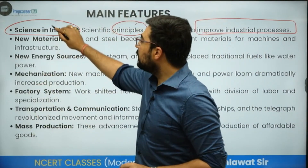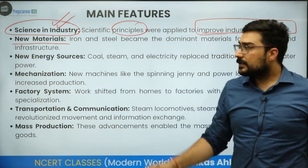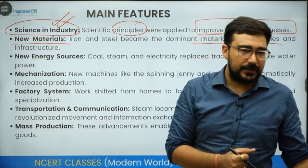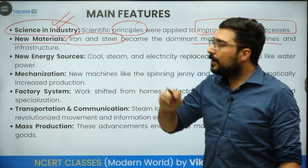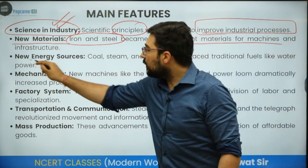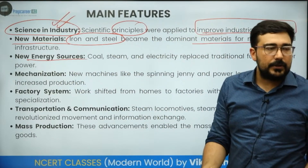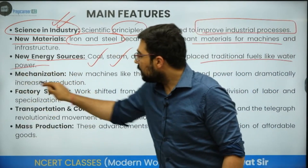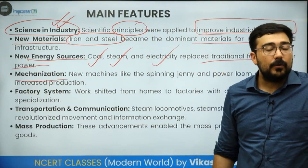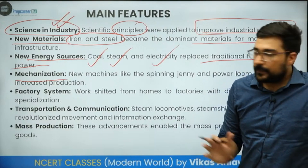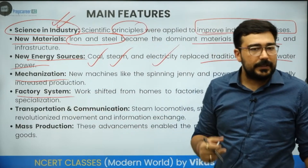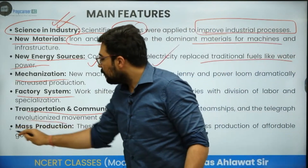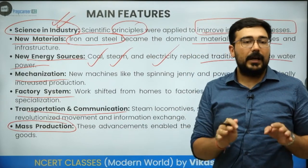Every industrial revolution requires science. Use of new materials — iron and steel became dominant materials for machines as well as infrastructure, because machines need to be durable. New energy sources: previously majority of production happened in homes, but now coal, steam, and electricity replaced traditional sources. Mechanization increased dramatically — maximum machines were created and people were required to operate them. Factory system replaced home-based production. Transportation and communication also improved, and finally, the most important thing: mass production.